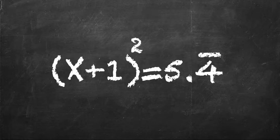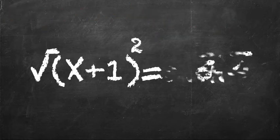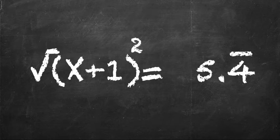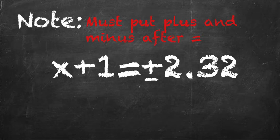The way to get rid of a square is to do the square root of the square. So we're going to put a square root over it, and then the square root over 5.4. And that comes out to be x plus 1 equals plus or minus 2.32.